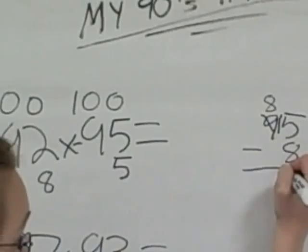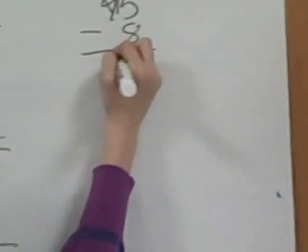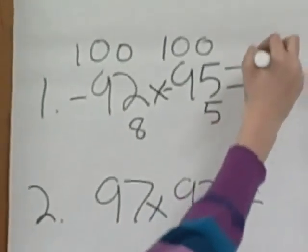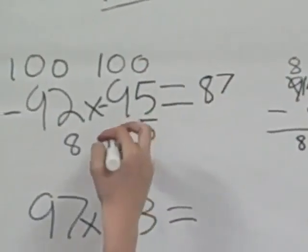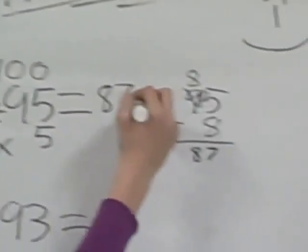Then you get 87 and you bring down your 8. So we know that the first two digits is 87. Then we do 8 times 5 and we get 40.